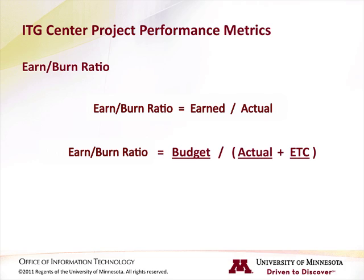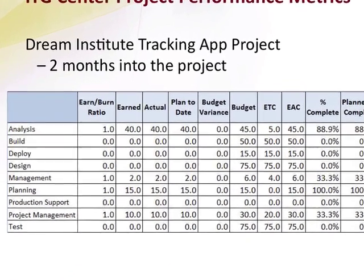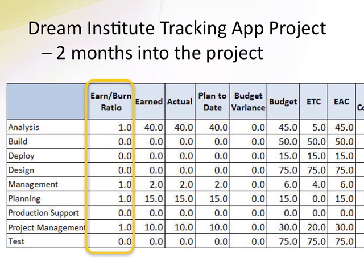Before we go any further, let's see an example of the earned and earned-burn ratio in the Dream Institute Tracking App project. The project has now completed 2 months. If we look at the earned-burn ratios, we see the value of 1 on a number of activities that have gotten underway. 1 is the ideal value and generally indicates that we are accomplishing what we had planned to do. For both the planning activity and the analysis activity, the value for earned equals actuals. This is just what we'd like to see — so far, things seem to be going according to plan.